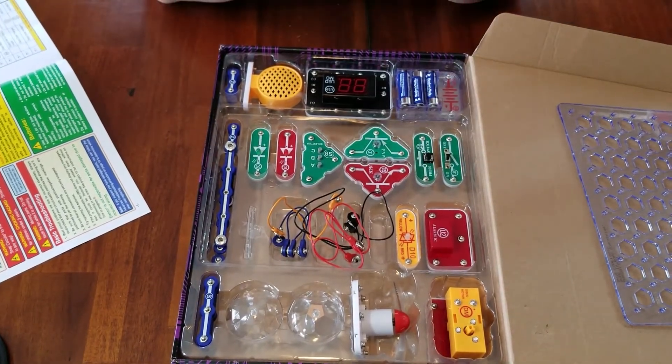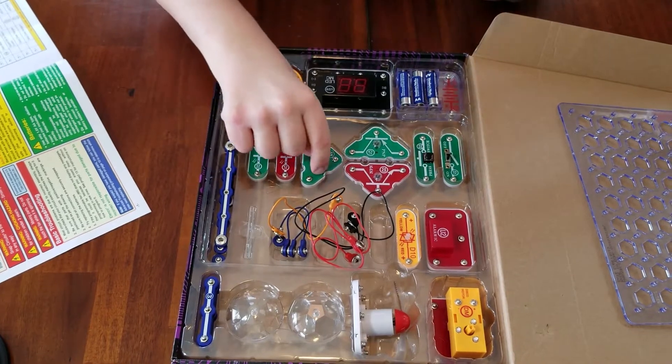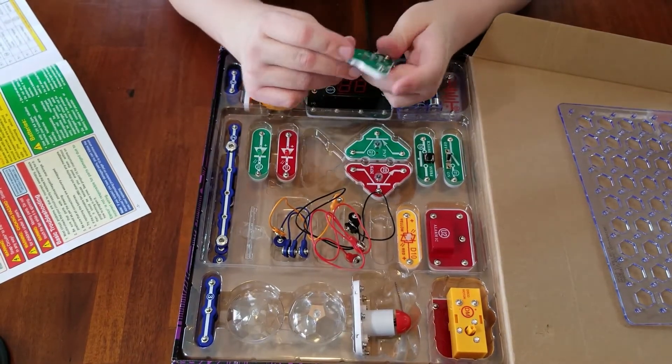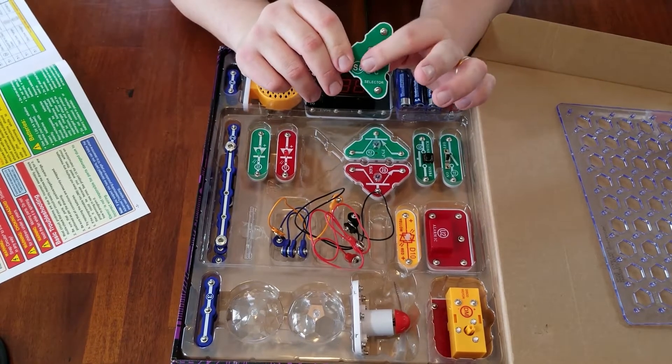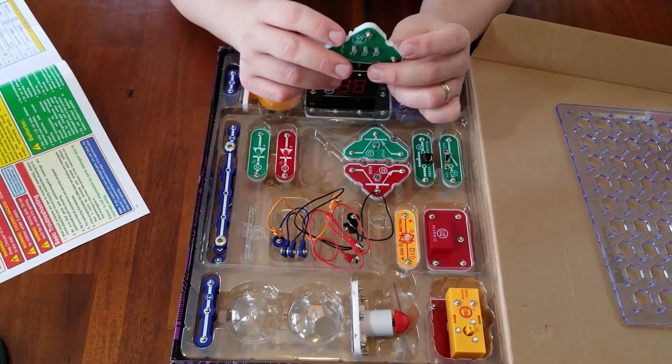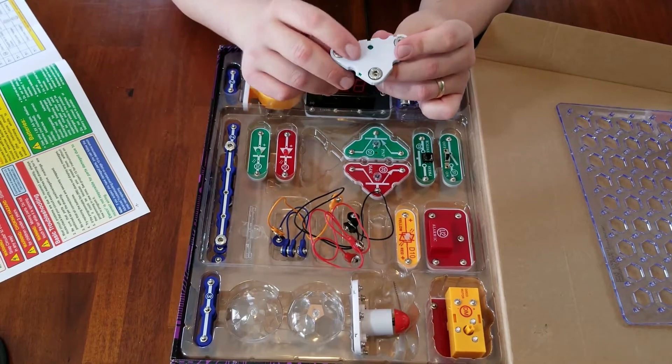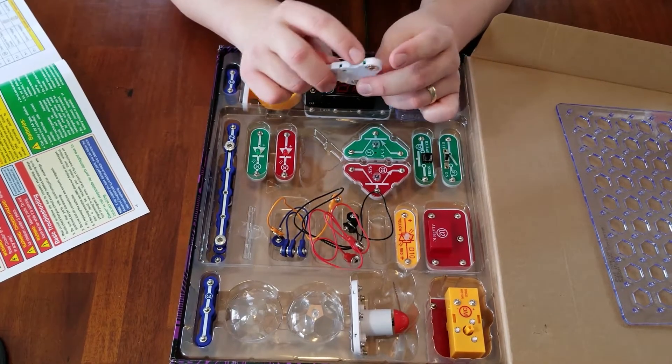Over here we have a selector. This is your selector, your three button selector. It's got the three A, B, and C here. And all this stuff I assume is replaceable or you can work on it by snapping the back off. See these little tabs.